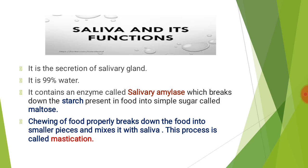We have already discussed about salivary glands. Let us now learn more about saliva. Saliva is the secretion of salivary glands present in the mouth. It is 99% water. It contains an enzyme called salivary amylase. Salivary amylase breaks down the starch present in food into a simple sugar called maltose. This is the reason why when we chew boiled rice, it starts tasting sweet after some time.